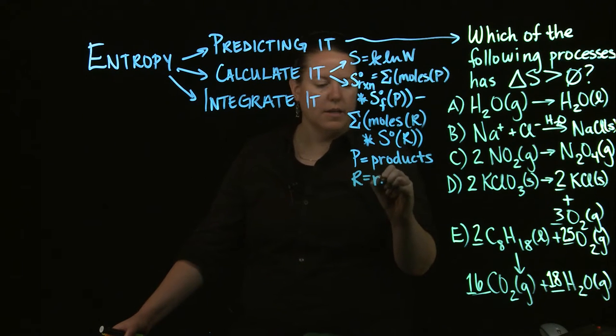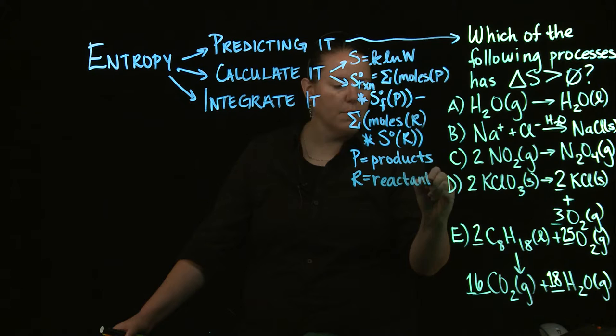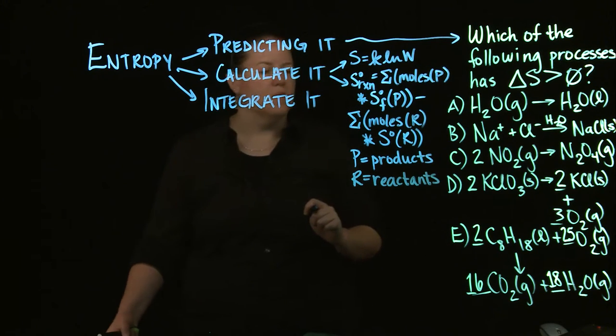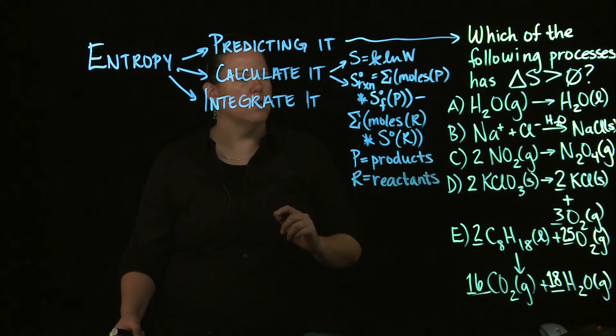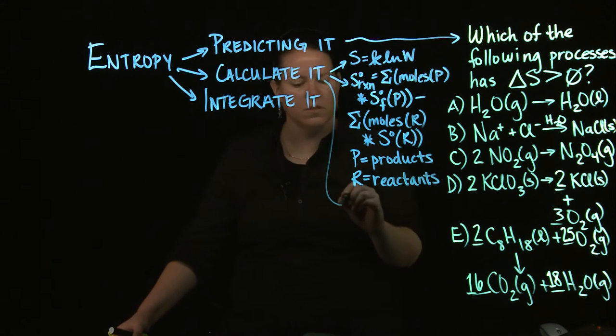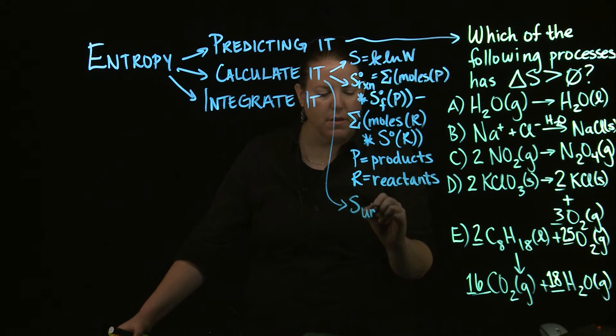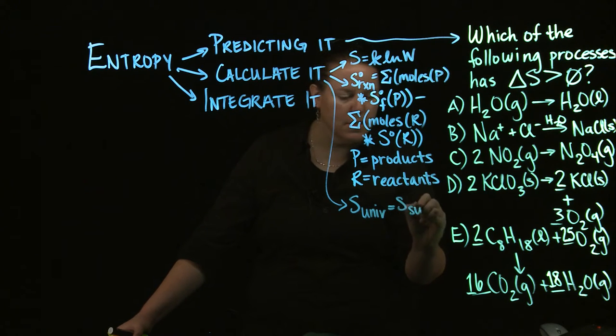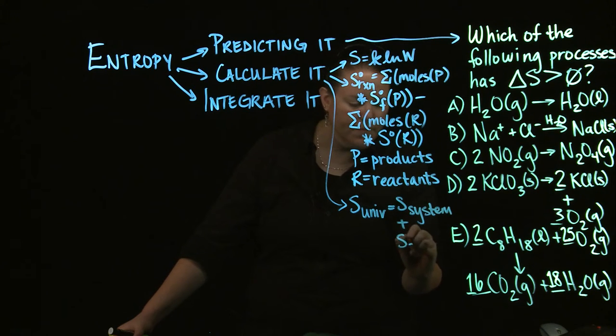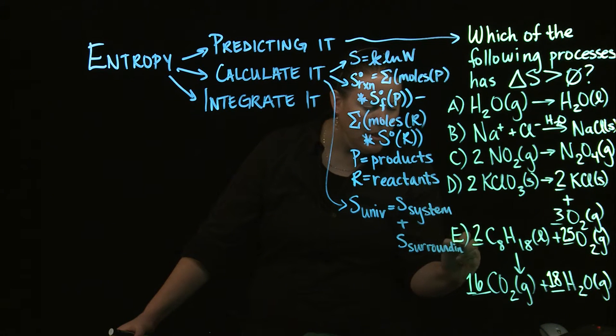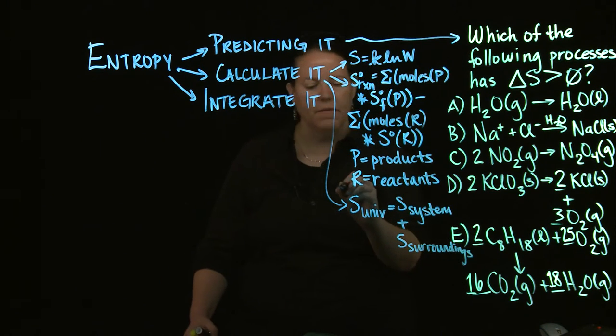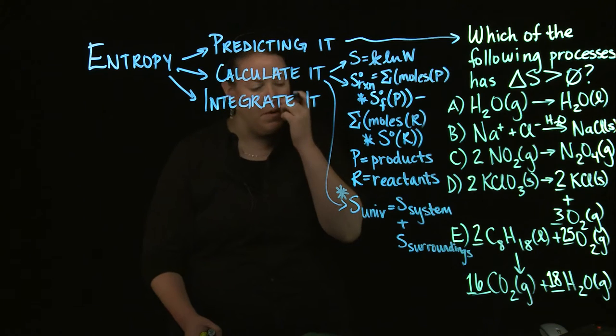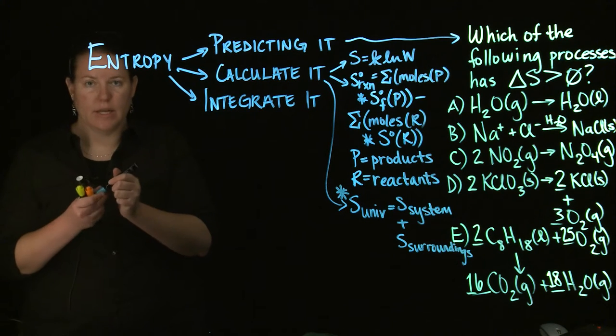This is products, P is products, R is reactants. And then the last way that we could calculate it is of course talking about the S of the universe versus the S of the system and the S of the surroundings. And you can do all kinds of things with this. This one, surprisingly enough, is the one that we really don't pay attention to too much in this class.